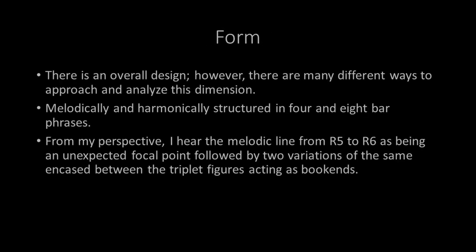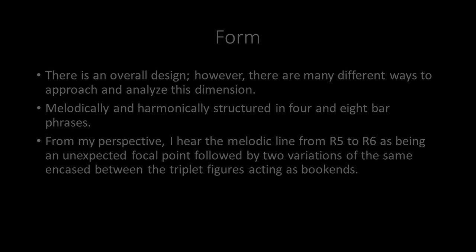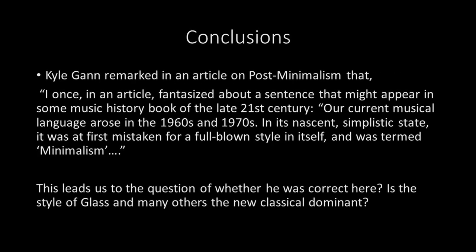Formally speaking, there is an overall design, though there are many different ways to approach and analyze this dimension. I hear that brief melodic line from rehearsal V to rehearsal VI — basically just a four-bar phrase — as being a kind of unexpected focal point. We get two variations of that same little theme, encased between the triplet figures and the melodic figures that act as bookends. I would say this work has the characteristics of a Chinese box: you open one box, and you open another box, and you open another box. It's a work that has layers, and there are layers that are encased within layers. Philip Glass's etudes are a major contribution to the piano repertory in terms of a post-minimalist aesthetic statement.